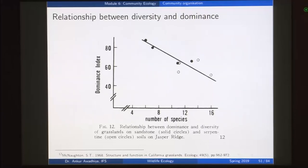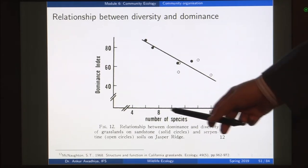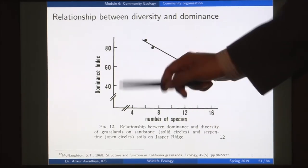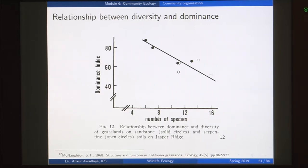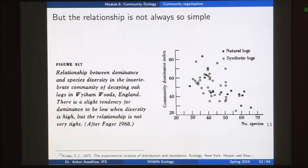The more the amount of dominance, the lesser the biodiversity. Also, the more the number of species, the lesser would be the dominance index, because when you have more species it is also possible that the numerical abundance of the top two species will be lesser. This is roughly the expected relationship, but it is not that simple when we look at field values.